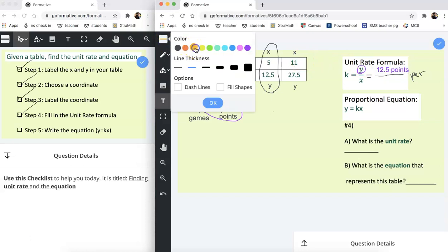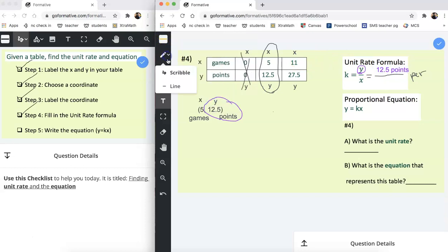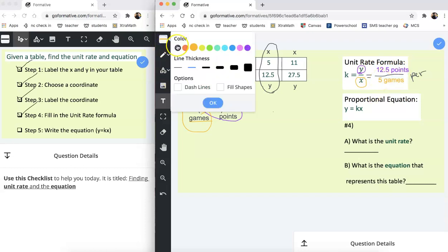And then I'll switch up the color. And now I'm looking for the denominator which is the x value. And the x value is five games. So I'm going to type five games in the denominator. When you look at this now, it's a rate but it's not a unit rate until the denominator is one. So we need to divide to change it to a unit rate.